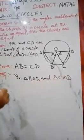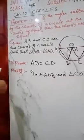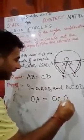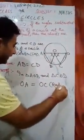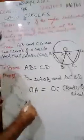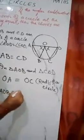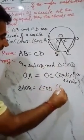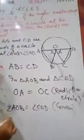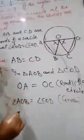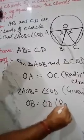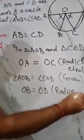So how do we do it? We consider triangle AOB and triangle COD. We know that OA equals OC and OB equals OD, as these are radii of the same circle.